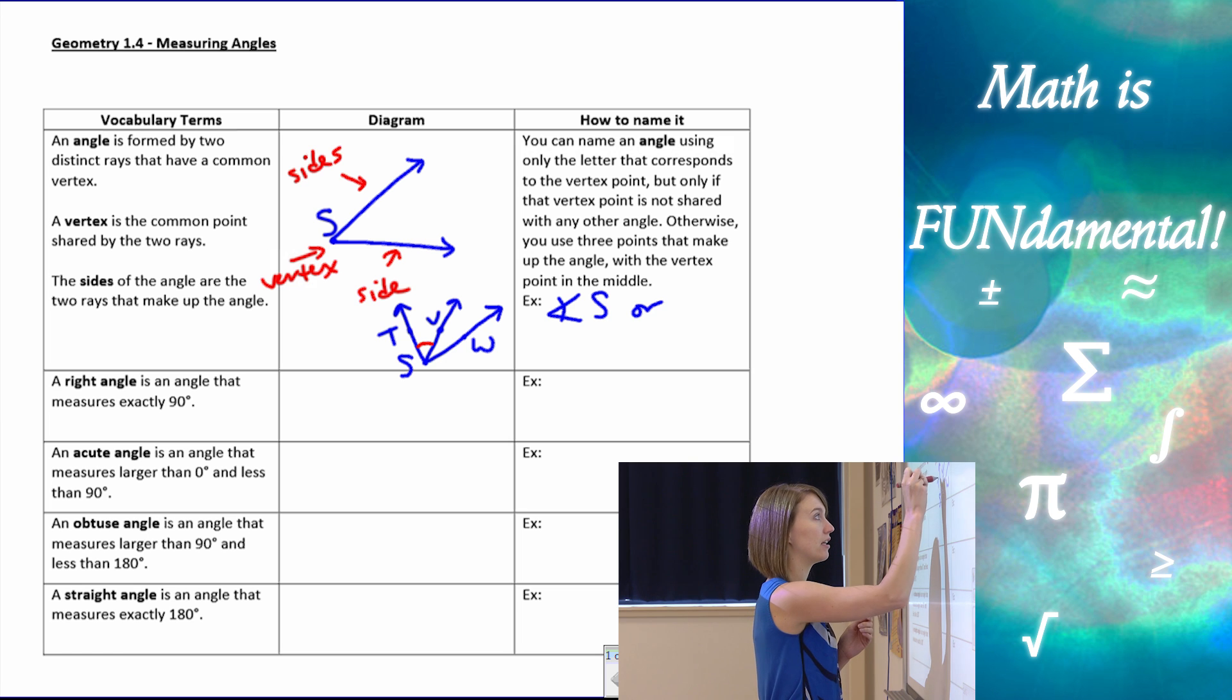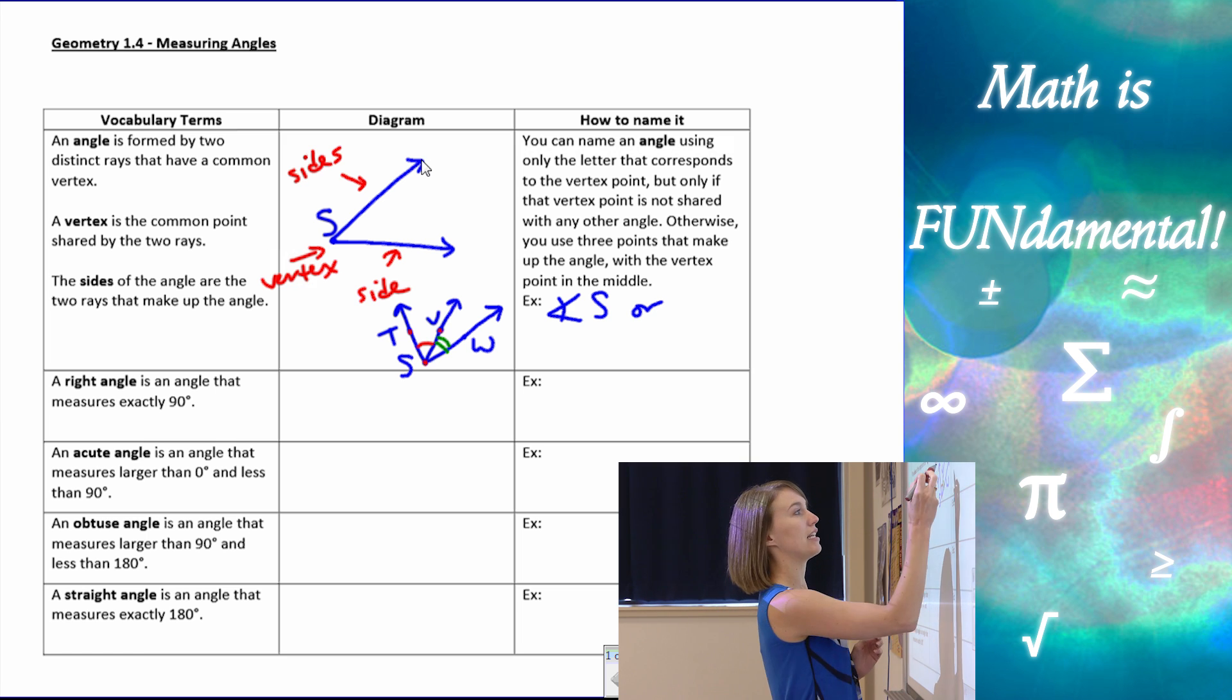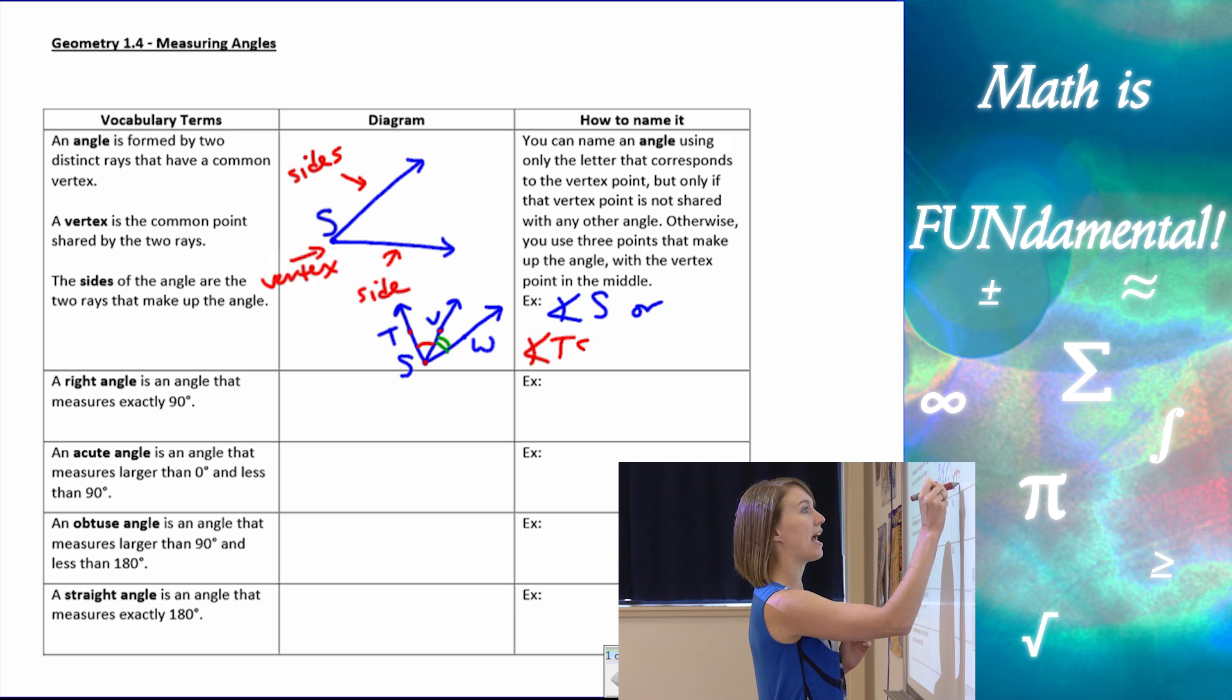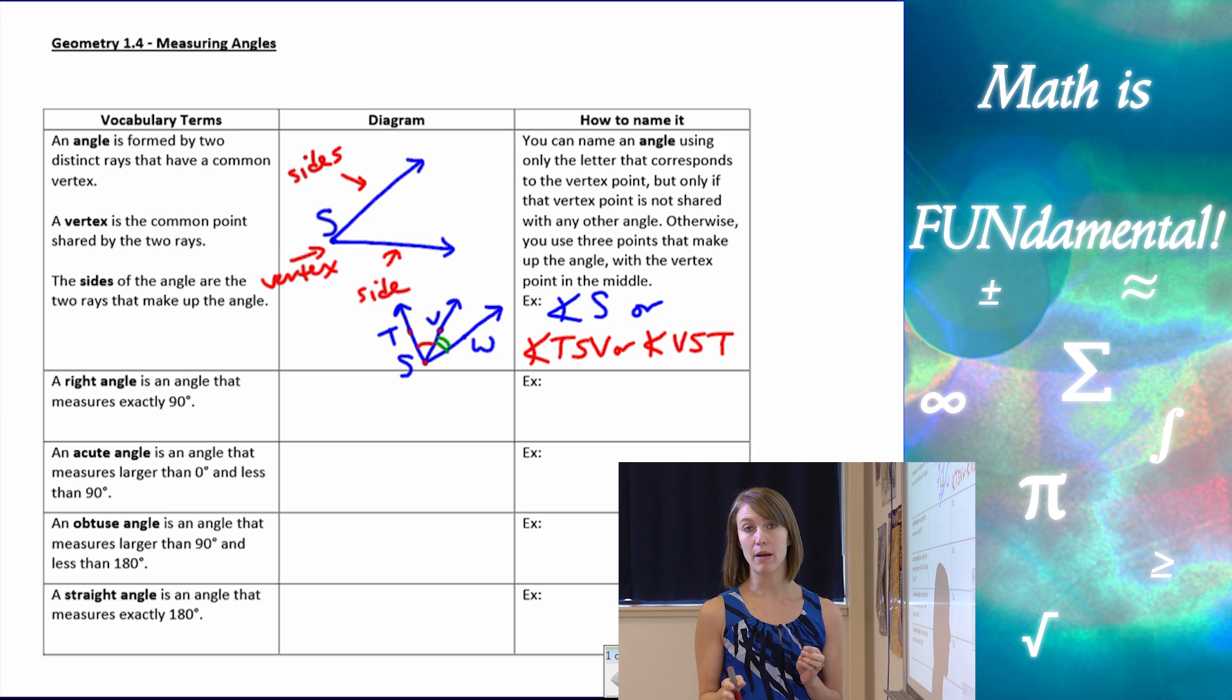I can name these angles, let me color code here. We'll call it the red angle and then we'll have the green angle. Our red angle I can name with the three points as long as the vertex point is in the middle of our angle. So it'd be angle TSV, or I can have angle VST. We can go either direction forward or backward as long as that vertex point is in the middle. That's how to name an angle.